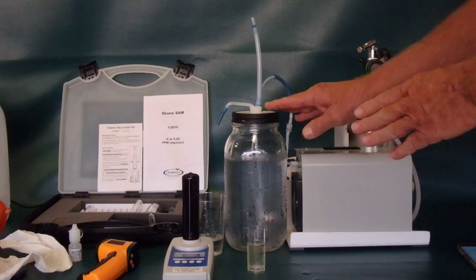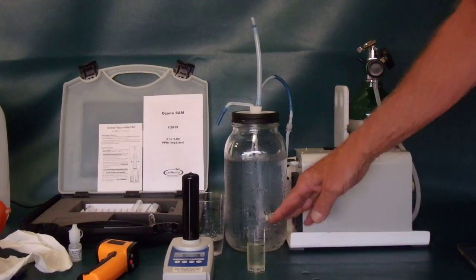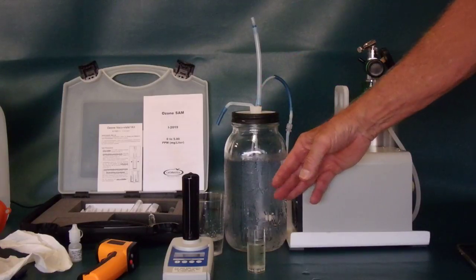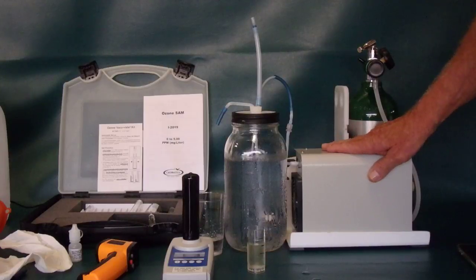So again, this is a Z0.5 system. Meaning half a gallon of water in an all glass and Teflon system off of anybody's generic generator that will put out one gram per hour.